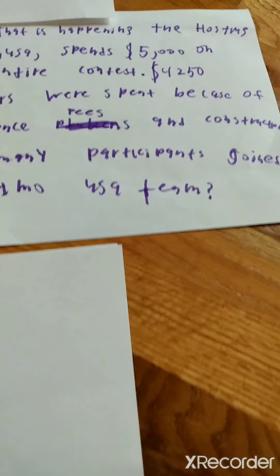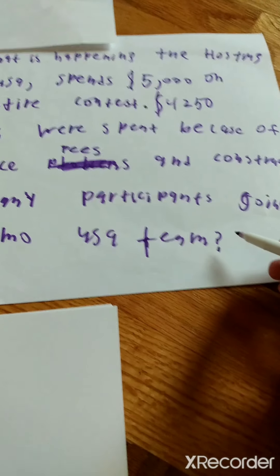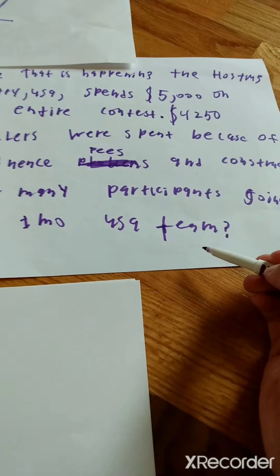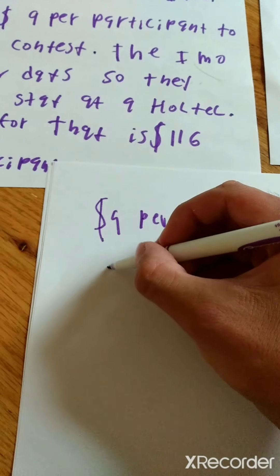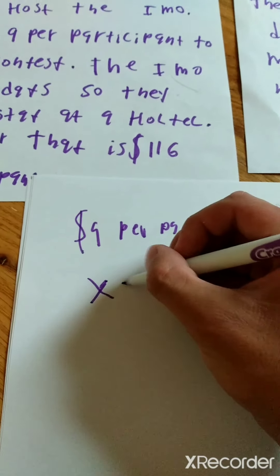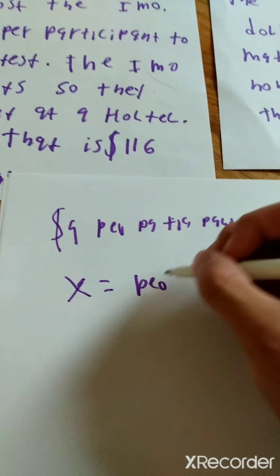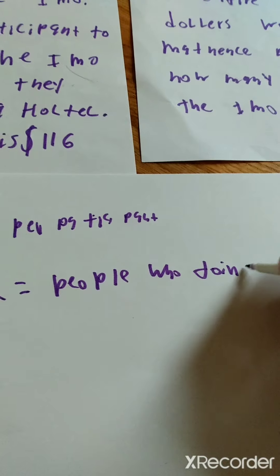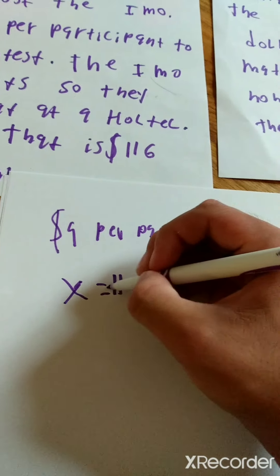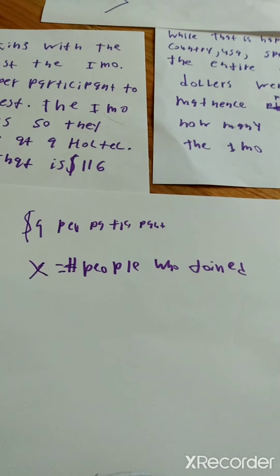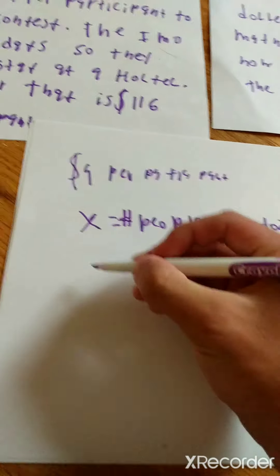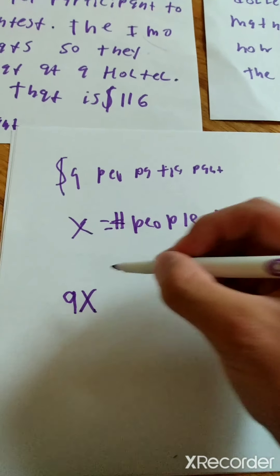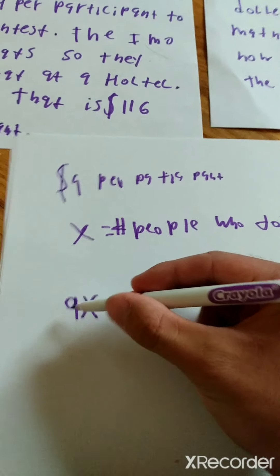What we're going to try and do is use a variable, because the question is telling us how many participants joined the USA team. So we're going to use the variable known as X as a letter, and that is going to mean people who joined the IMO team. But it's actually a number of people who joined the team. So since we have that, $9 per participant, now we have 9X. So every participant that joins, they must pay a fee of $9.